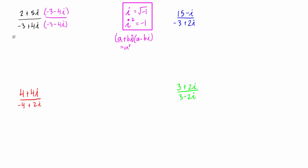Let's verify that this actually happens. On the top we have negative two times negative three, which is negative six, and two times negative four i is minus eight i. We have five times negative three, so minus fifteen i, and then five times negative four i, so we have minus twenty i squared on the top. On the bottom we have negative three times negative three, which is nine; negative three times negative four gives plus twelve i; four times negative three gives minus twelve i; and then minus twenty i squared.